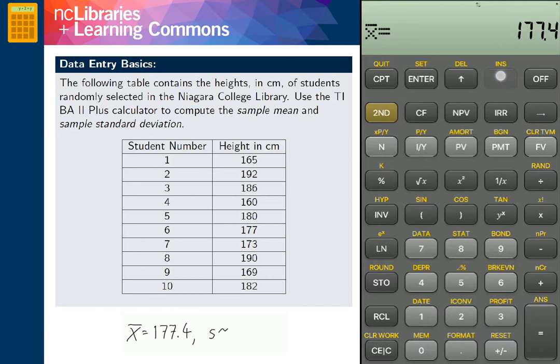S of x is the sample standard deviation. Sigma of x is the population standard deviation.